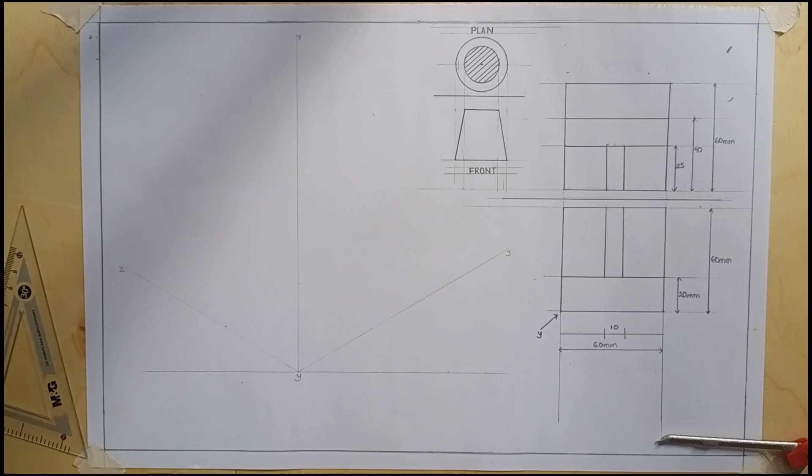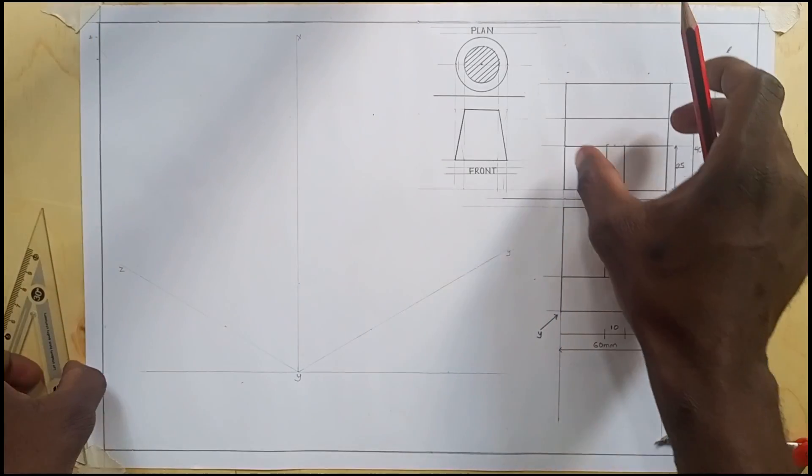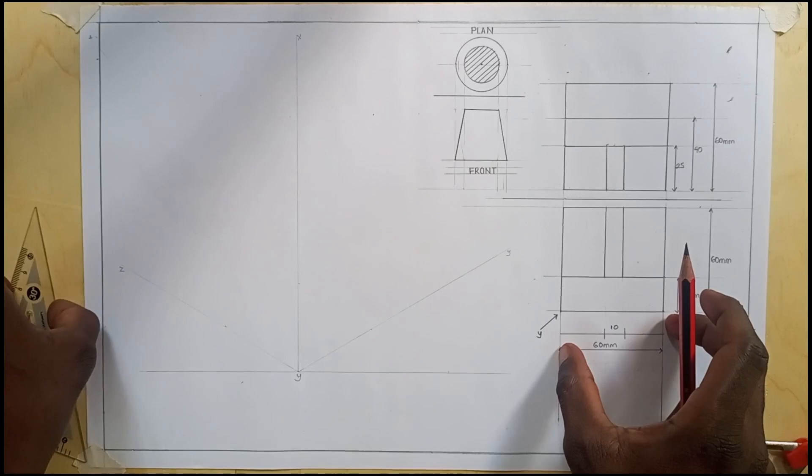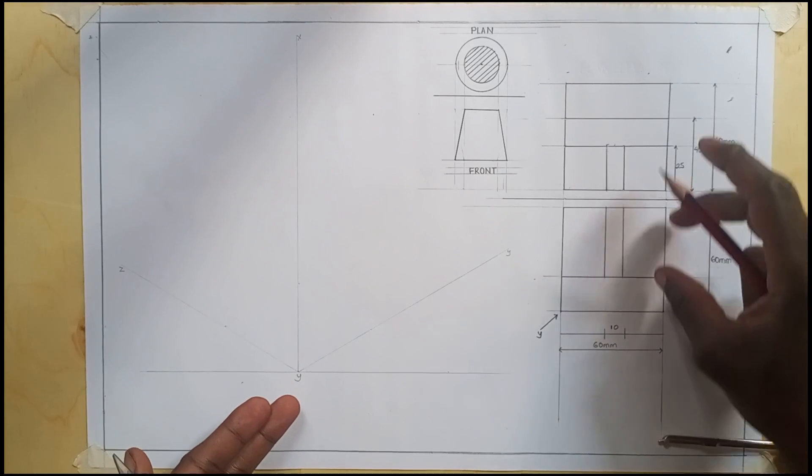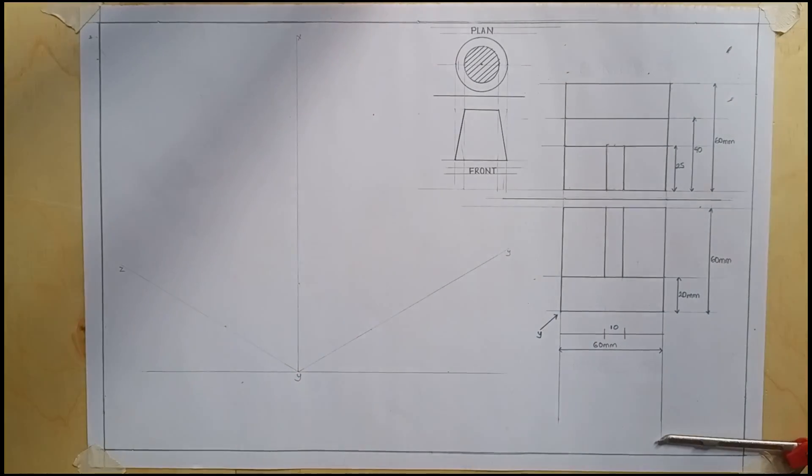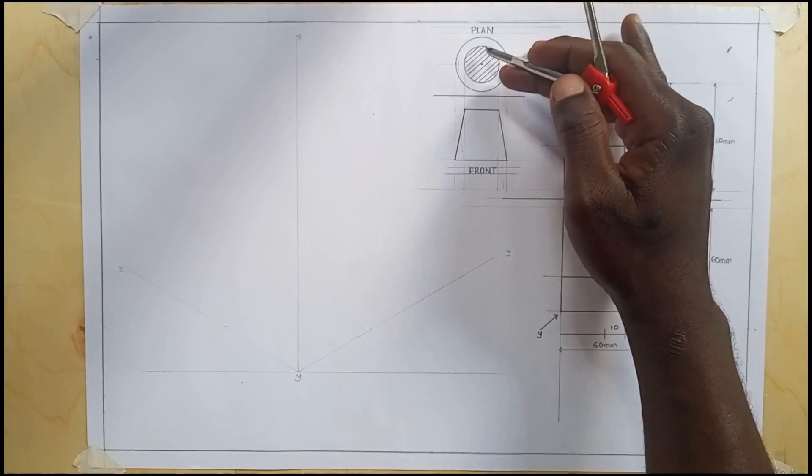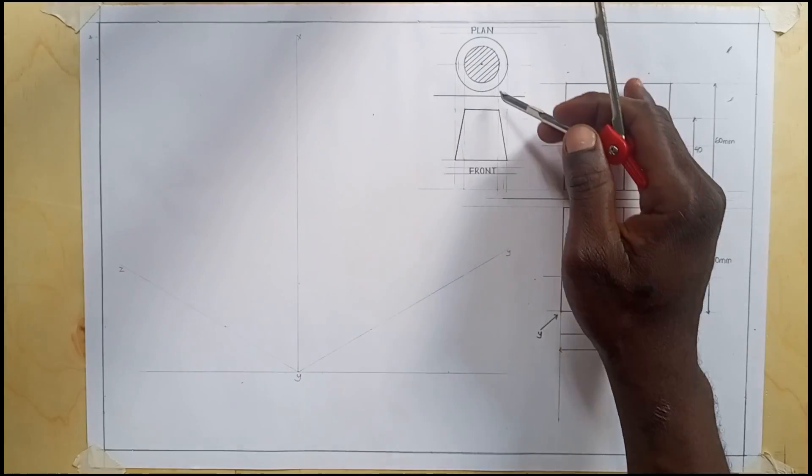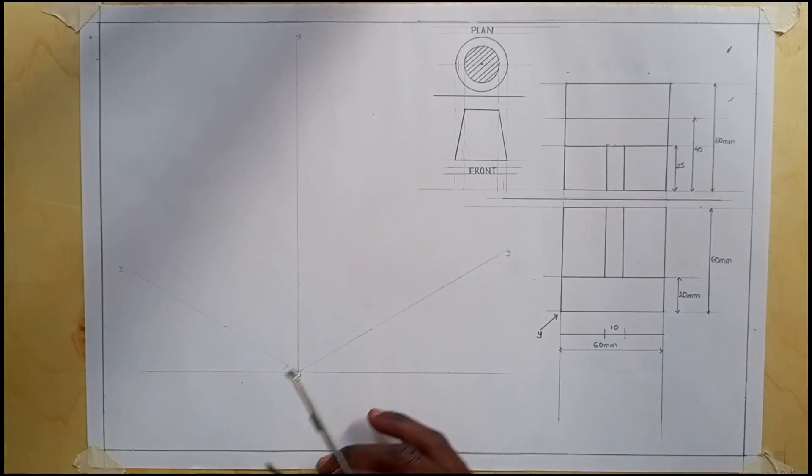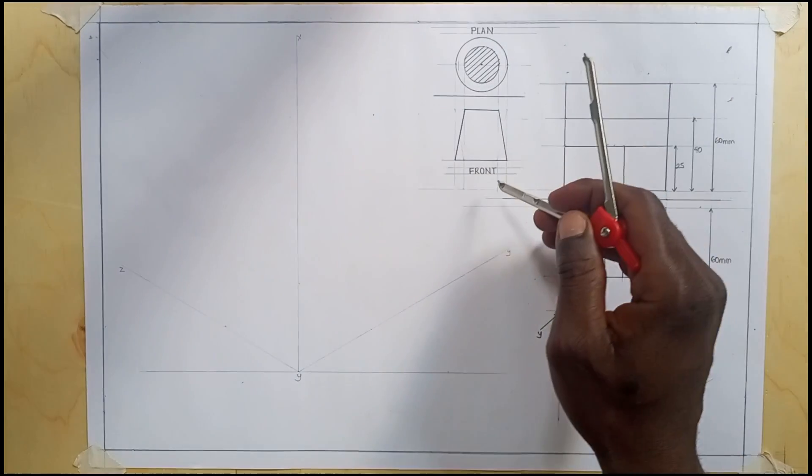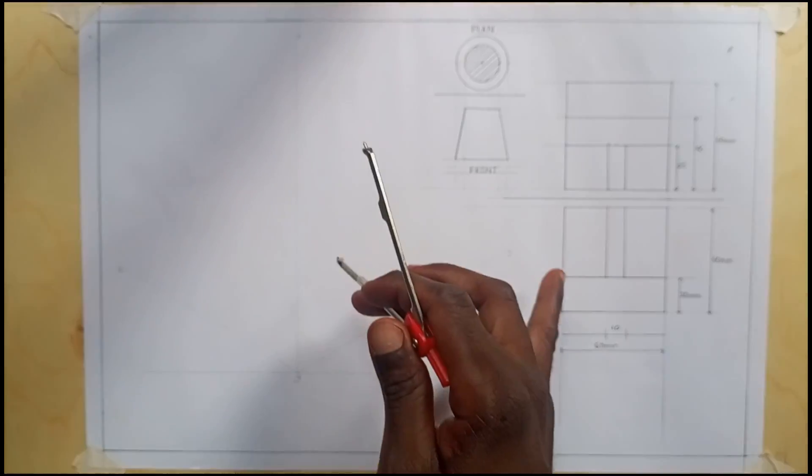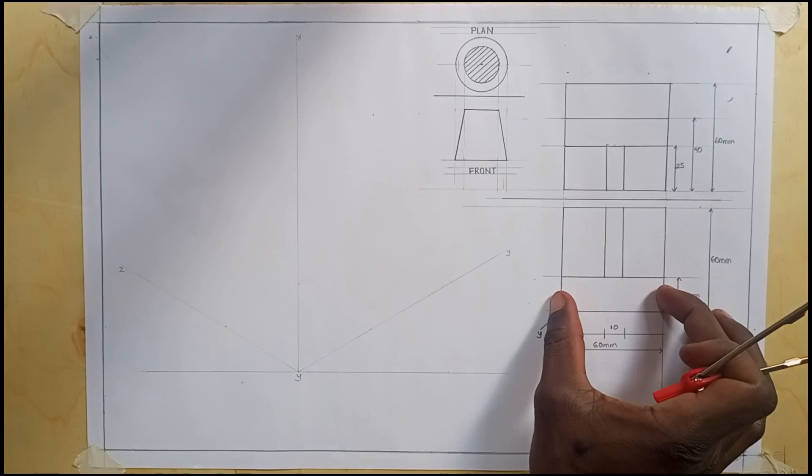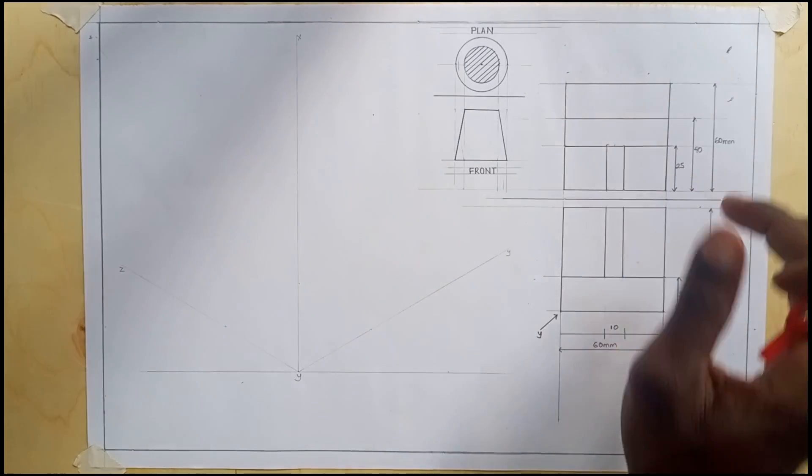We're going to start interpreting this drawing in orthographic projection. According to our symbol here, this is the symbol for third angle projection, whereby the plan is over the top and the front elevation is over at the bottom base.